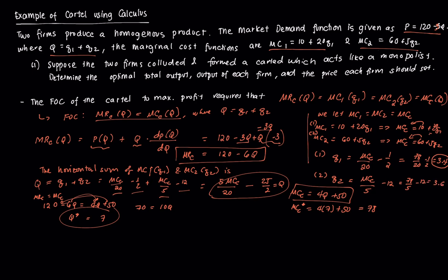Then, 78 over 5 minus 12. This is equal to 3.6, which is the output of firm 2. Those are the individual outputs. And, again, 3.4 plus 3.6. An easy way to check if you've gotten the right answer is if you add Q1 plus Q2, this should equal to 7. Does it equal to 7? And, yes. 3.4 plus 3.6 is equal to 7. So, the answer is correct.